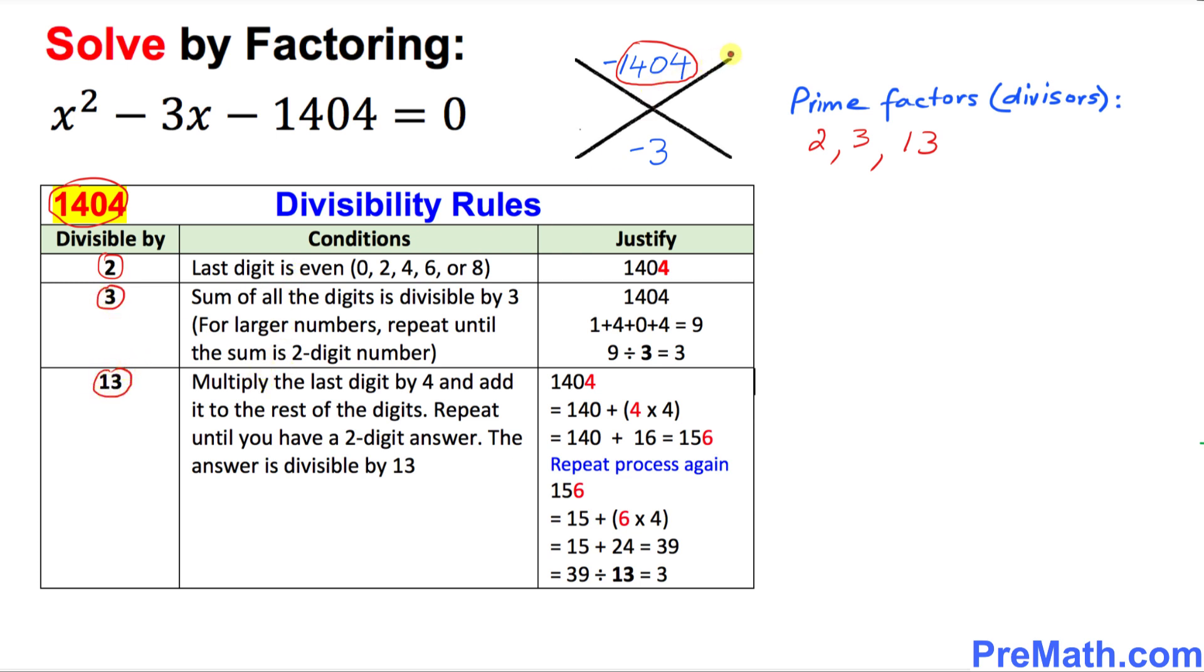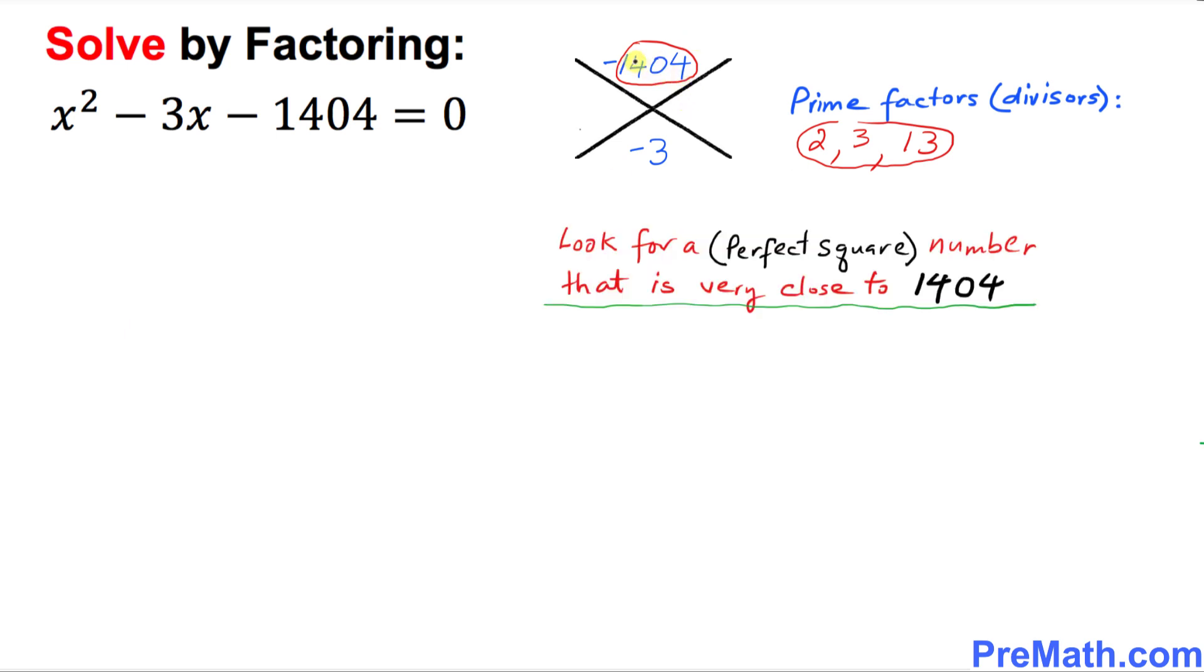These numbers 2, 3, and 13, which are the prime factors of this number, are going to help us a lot when we are finding the factors of this big number. Now we want to find the factors of 1404. Since this is a big number, it's not that easy. Let me show you a simple way of doing this.